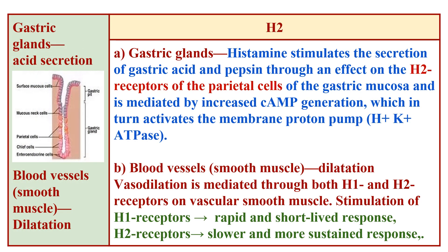The main functions of H2 receptors are gastric acid secretion, vasodilation, and cardiac contraction. Histamine stimulates secretion of gastric acid and pepsin through direct effect on H2 receptors of the parietal cells of the gastric mucosa, mediated by increasing cyclic AMP generation, which activates the membrane proton pump H+/K+ ATPase, increasing acid secretion in the stomach.